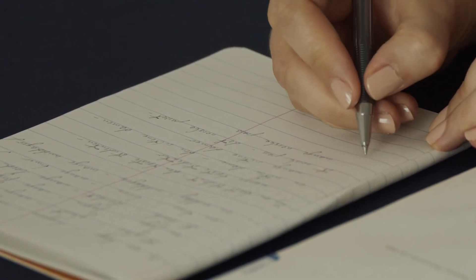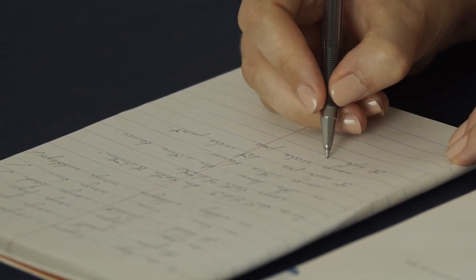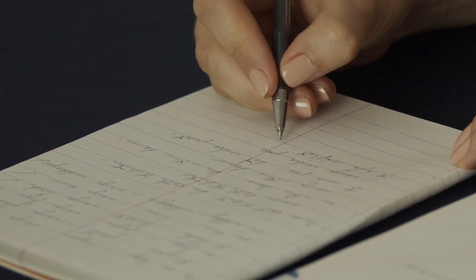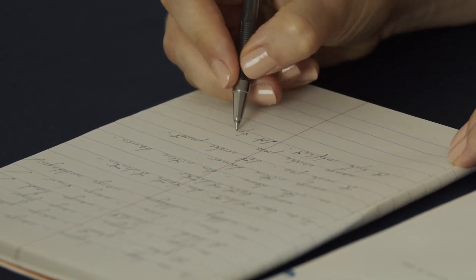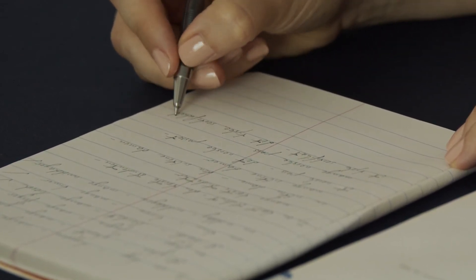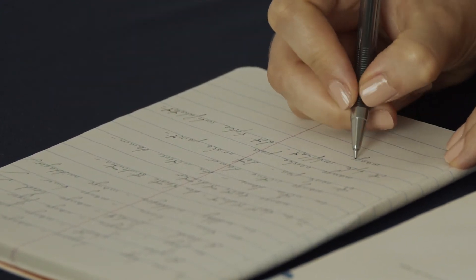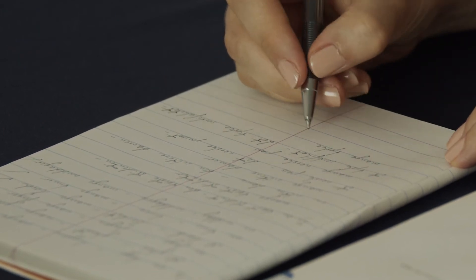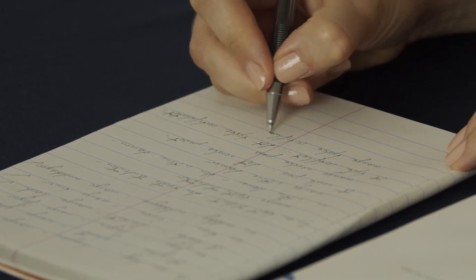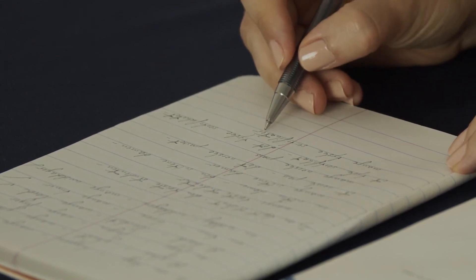Right, then we have et tysk sertifikat, a German certificate. Det tyske sertifikatet. And mange tyske sertifikater. This is quite a long word so we add the plural ending.